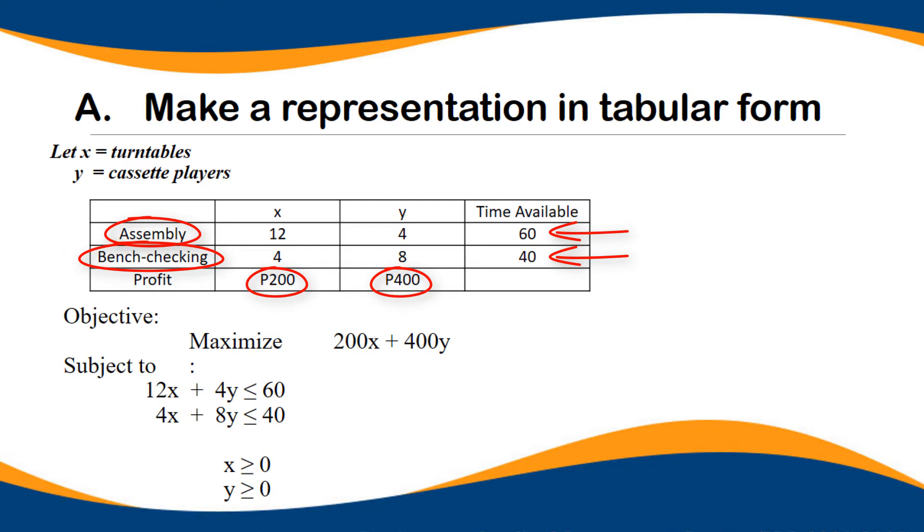First, let us make a representation. Let X be the turntables and Y represents the cassette players. So we put this in tabular form. For turntables, the assembly period is 12 hours and bench checking is 4 hours. For cassette players, the assembly period is 4 hours and bench checking is 8.